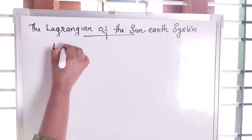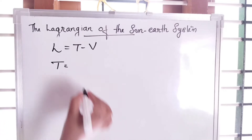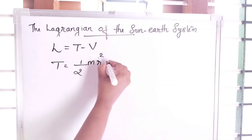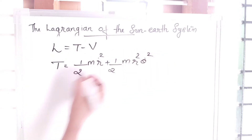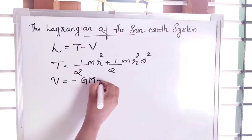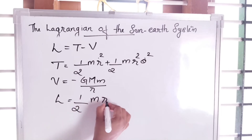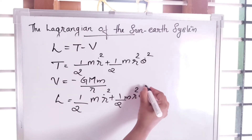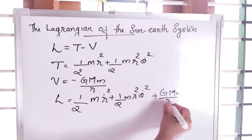The Lagrangian L is equal to T minus V. For the Sun-Earth system, the kinetic energy T can be written as one-half m r-dot squared plus one-half m r squared theta-dot squared. The potential energy V is equal to minus GMm over r. Therefore, the Lagrangian is equal to one-half m r-dot squared plus one-half m r squared theta-dot squared plus GMm over r.